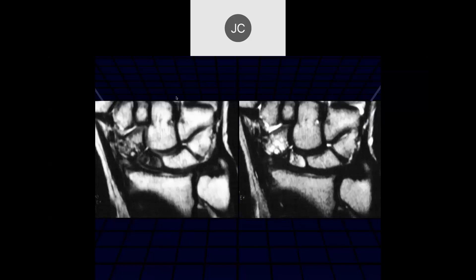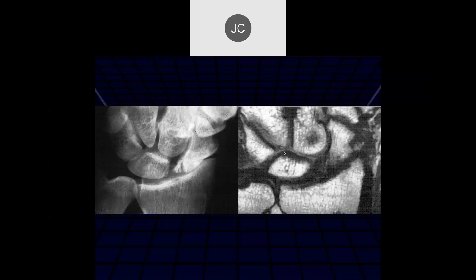Another case shows a chronic non-united fracture of the scaphoid waist with subchondral cystic changes from ongoing instability. This is another example of osteonecrosis and collapse of a proximal fragment from a proximal scaphoid waist fracture. These proximal waist fractures really need to be stabilized to maximize the ability to reintroduce vascular supply to that proximal pole before collapse occurs.